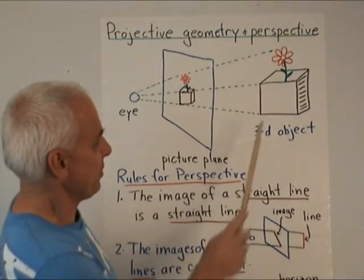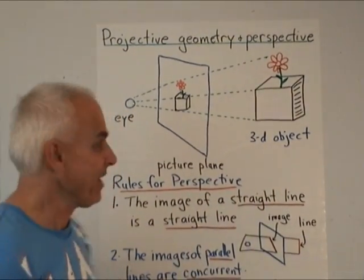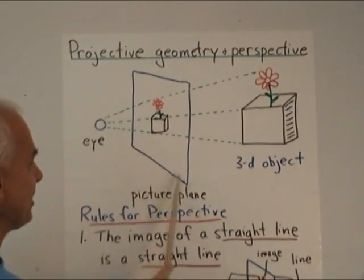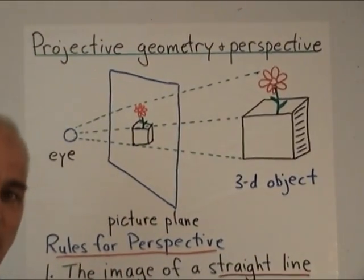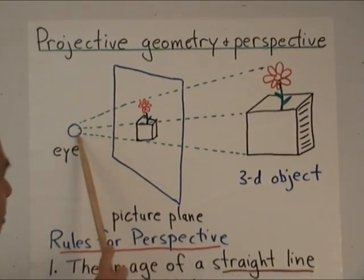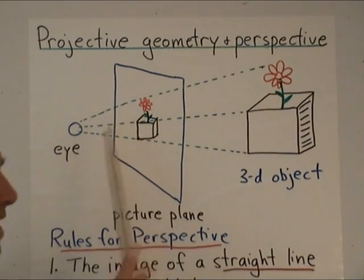For example, here's a flower in a box and here's an artist's eye and here's the easel which the artist is drawing and he would like to represent this graphically correctly.